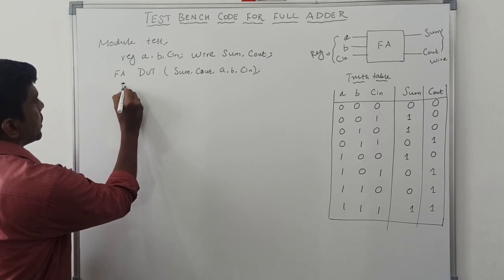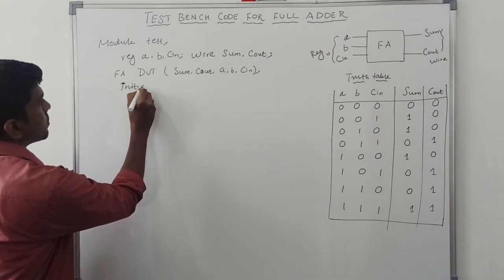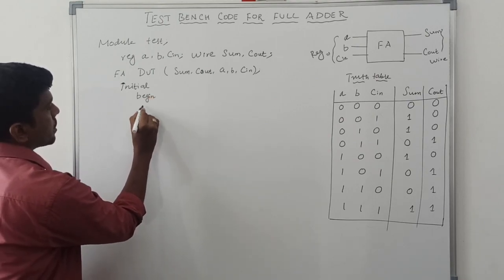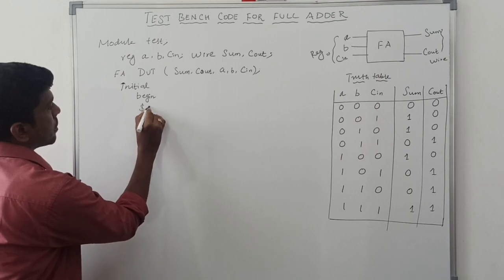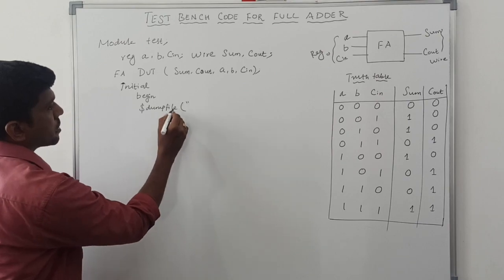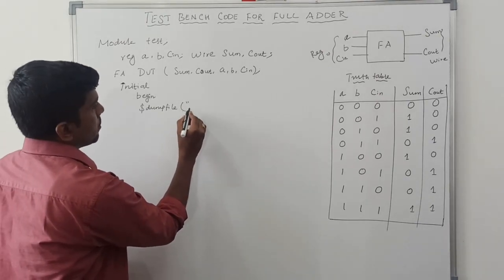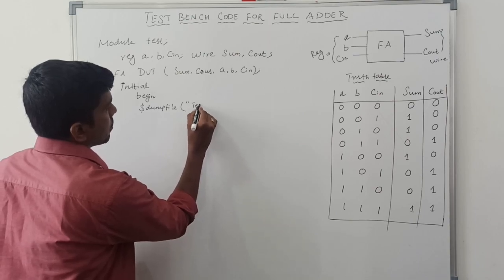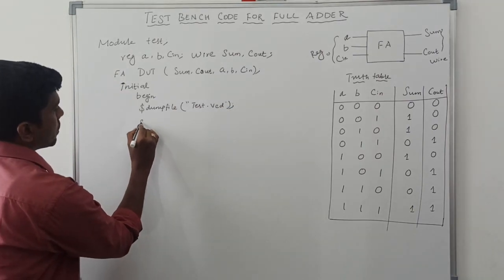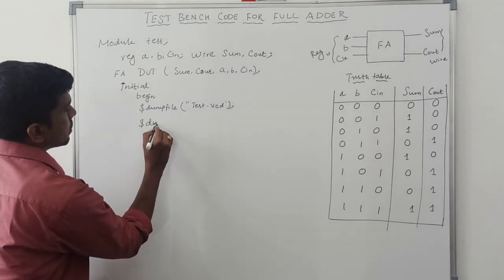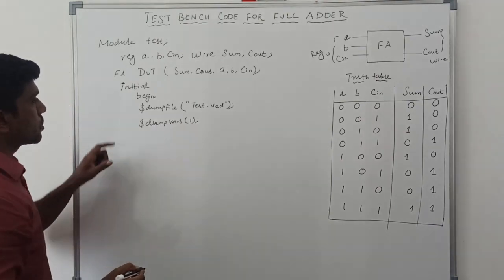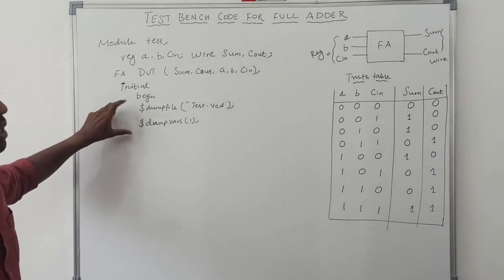Then the next line is 'initial', then 'begin' to start the operation. After the begin statement, declare dumpfile — this instruction is used to simulate the code. The dumpfile name is 'test.vcd'. Then declare dumpvars. These two instructions — dumpfile and dumpvars — help to simulate the program.